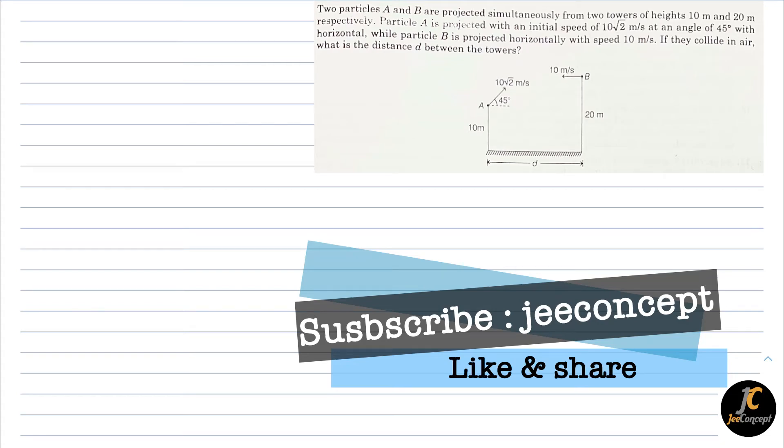Hello friends, in this video we will solve a question which says two particles A and B are projected simultaneously from two towers of height 10 meter and 20 meter respectively. Particle A is projected with an initial speed of 10√2 meter per second at an angle of 45 degrees with horizontal, while particle B is projected horizontally with speed 10 meter per second. If they collide in air, what is the distance d between the towers?